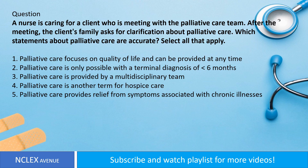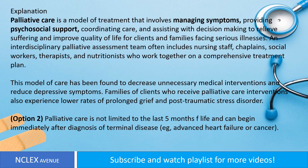Answer. Options 1, 3, and 5 are correct. Explanation: Palliative care is a model of treatment that involves managing symptoms, providing psychosocial support, coordinating care, and assisting with decision-making, to relieve suffering and improve quality of life for clients and families facing serious illnesses.